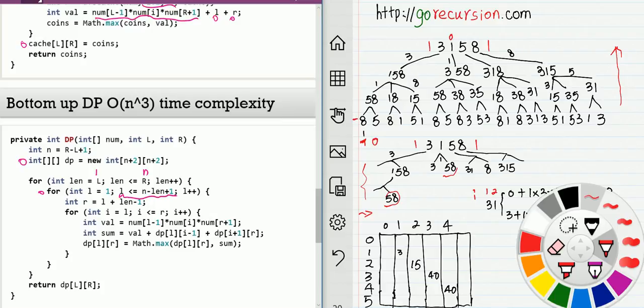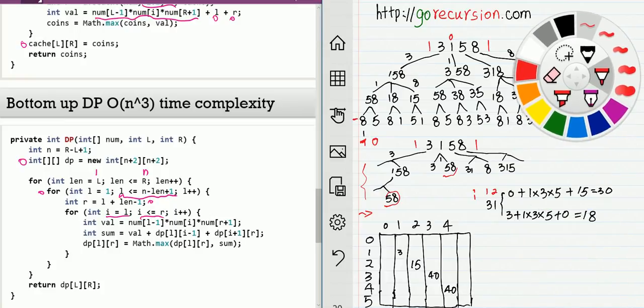Now inside each window, we have an option from left to right. We have an option. For each option, because we're using bottom-up, for example, here length is 1, we already solved. That's 3, 15, 14, 14.